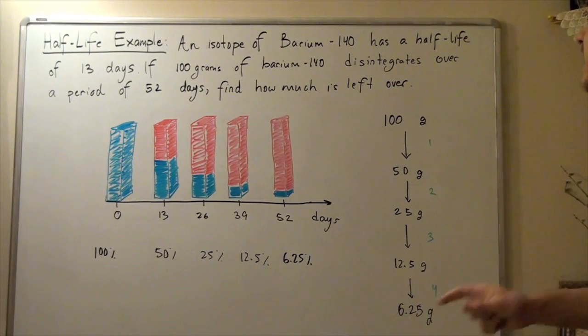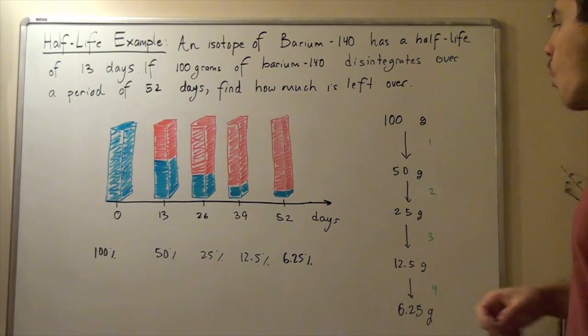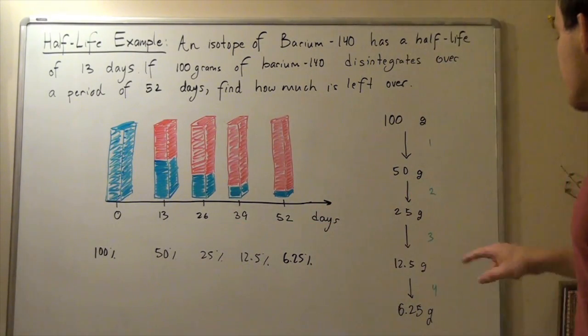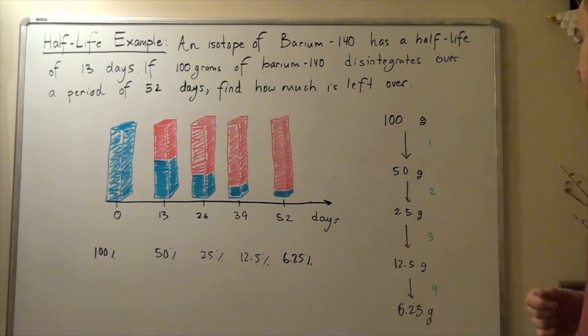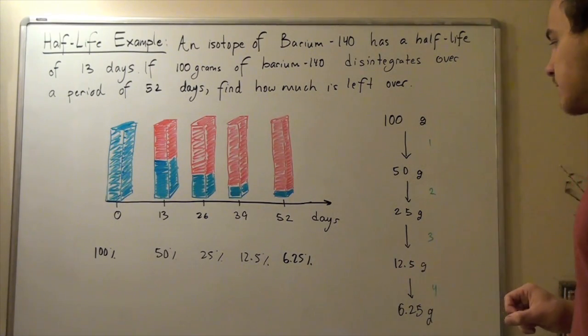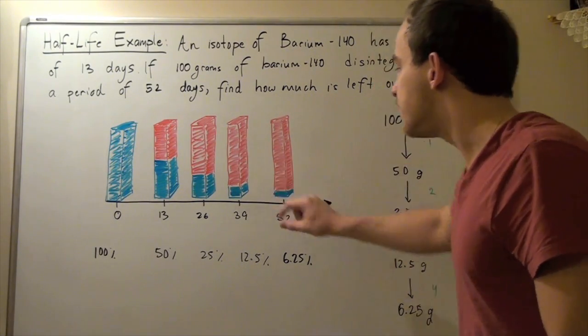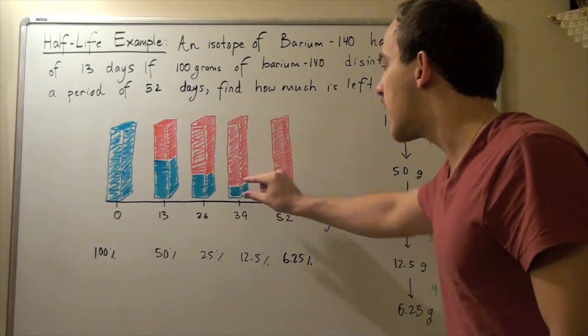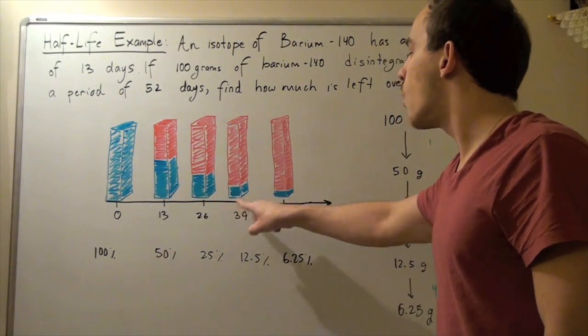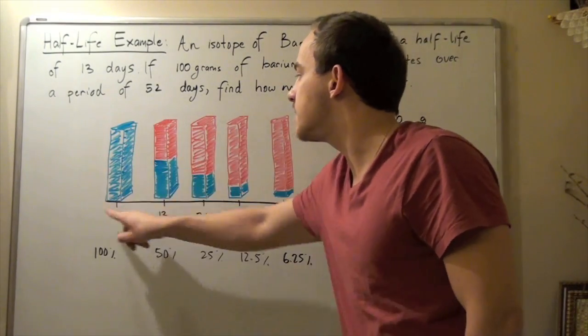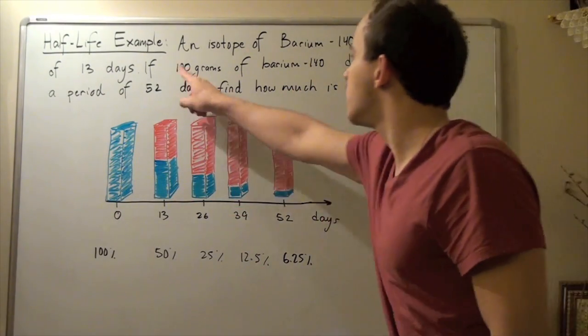So now let's look what happens after one more half-life or 39 days. After one more half-life, we have exactly 50% of 25 grams, and that gives us 12.5 grams. So that's exactly what we see. This is 12.5 grams, where this is 100 grams. So this is about 12.5% of this total amount of 100 grams.